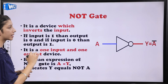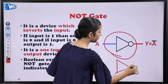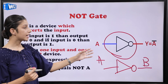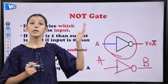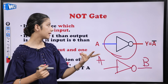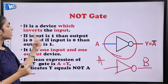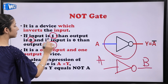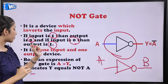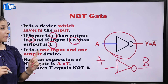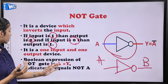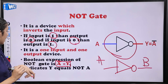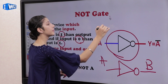Moving on to the next gate — NOT gate. The NOT gate symbol is a triangle with a small circle (bubble) at the output. Basically, whatever input is given — if input is 1, output is 0; if input is 0, output is 1. It inverts the input. It is a one-input, one-output device. The boolean expression for NOT gate is Ā = Y, which indicates Y equals NOT A.